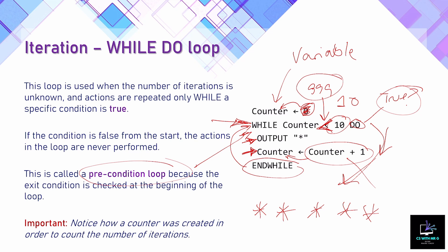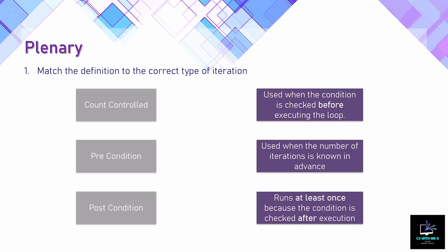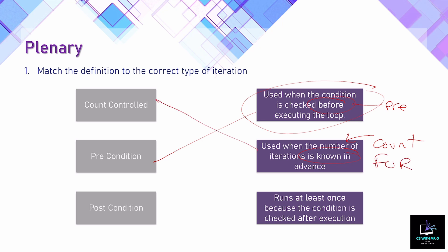Simply being able to identify the three different loop types can gain marks in the exam. Here's a typical past paper question: match the loop type with its description. 'Used when the condition is checked before executing the loop' — before means pre, so it's a precondition loop, i.e., a while loop. 'Used when the number of iterations is known' — that's a count controlled loop, otherwise known as a for loop. 'Runs at least once because the condition is checked after execution' — post means afterwards, and that's a repeat until loop.